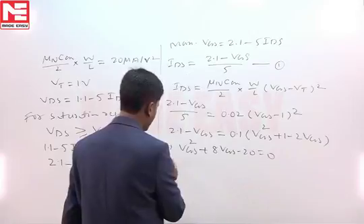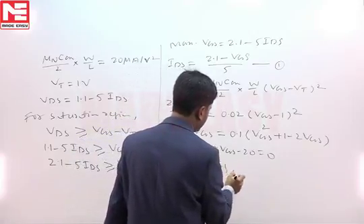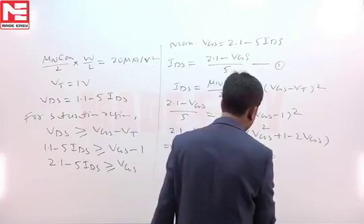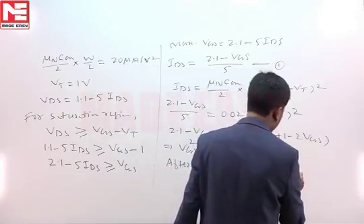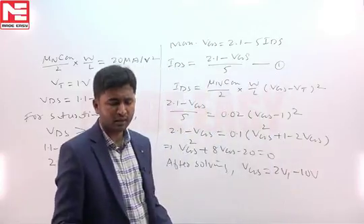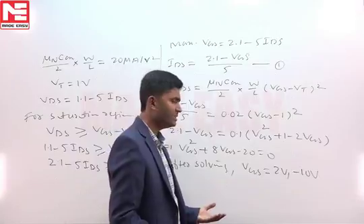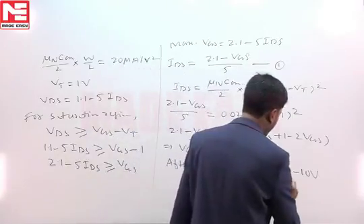And you can solve it. After solving, you will get VGS equal to 2 volt and minus 10 volt. Now, minus 10 volt I can discard because VGS has to be greater than the threshold voltage. So, VGS will be 2 volt and this we can ignore.